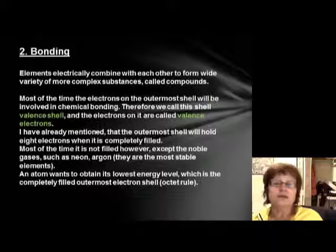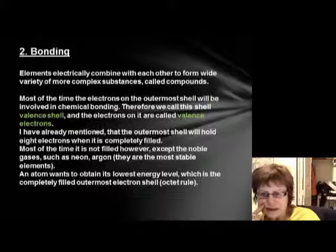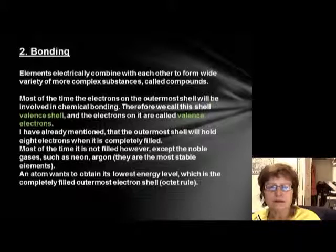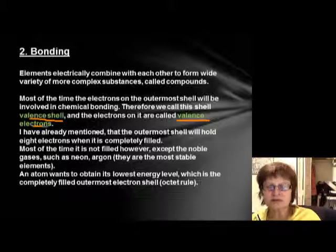Almost all the time when chemical bonding happens, the electrons on the outermost electron shell — what we call the valence shell — are the ones involved in the chemical reactions. Therefore, we call the electrons on these shells valence electrons.